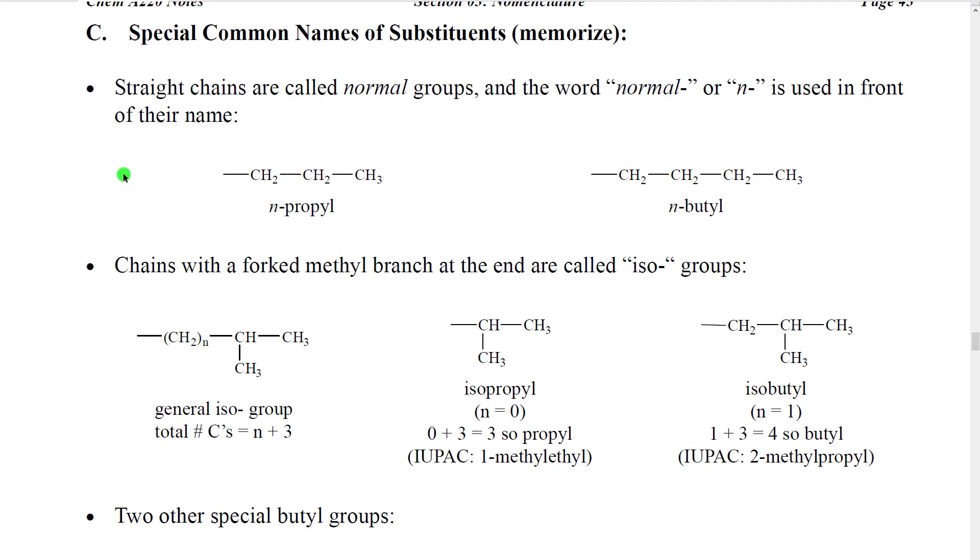There are some special common names of substituents. These were basically names that were invented before the IUPAC, and many of them they were trying to make a systematic naming system. And then the IUPAC took it, cleaned it up, and made it the modern IUPAC systematic naming system. You're going to need to memorize these names. These names are often found in common names, they're often found in catalogs, they're used a lot.